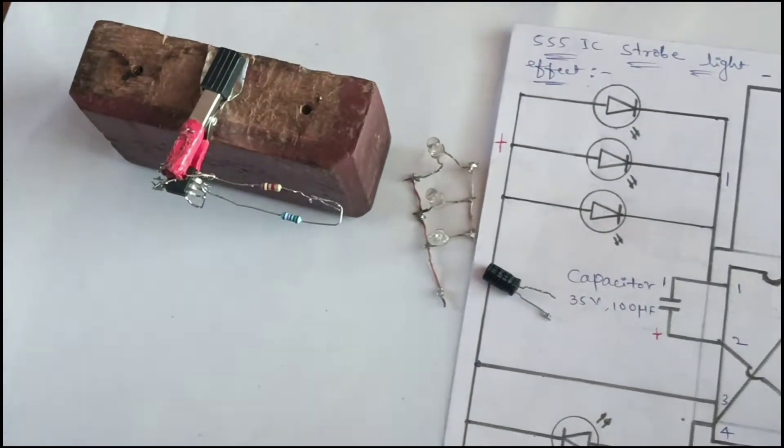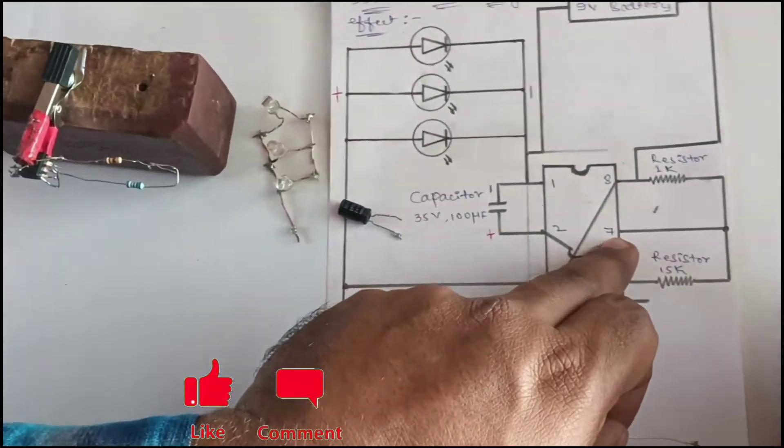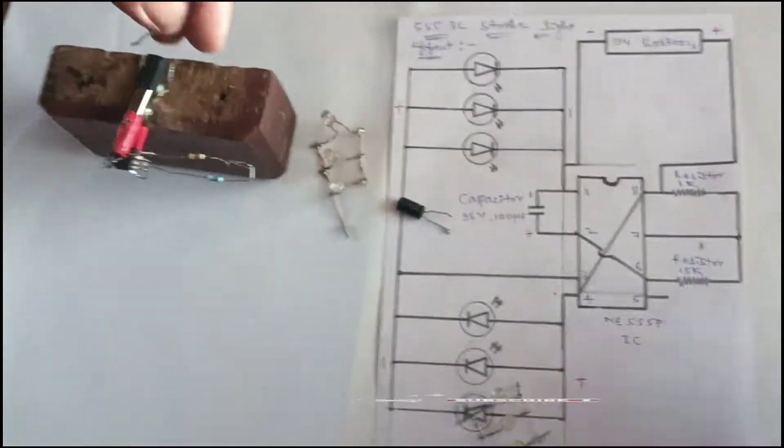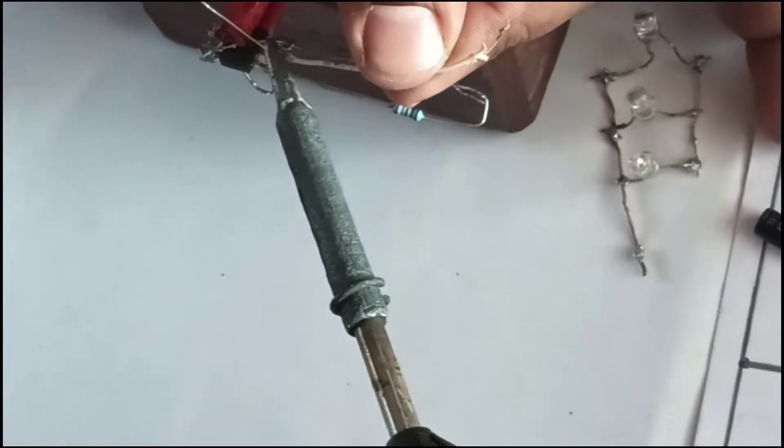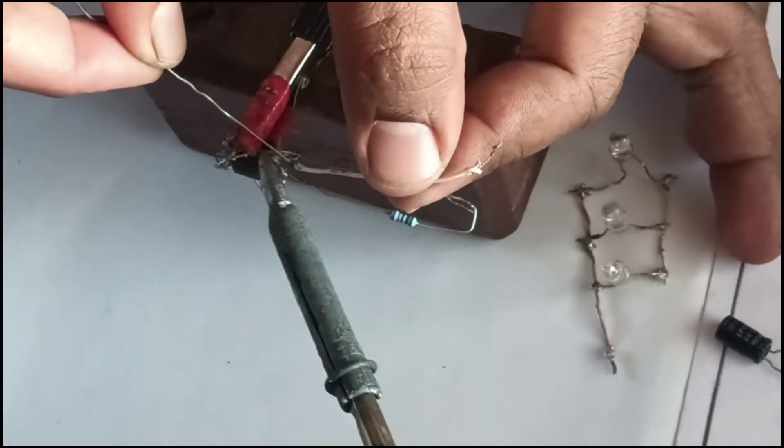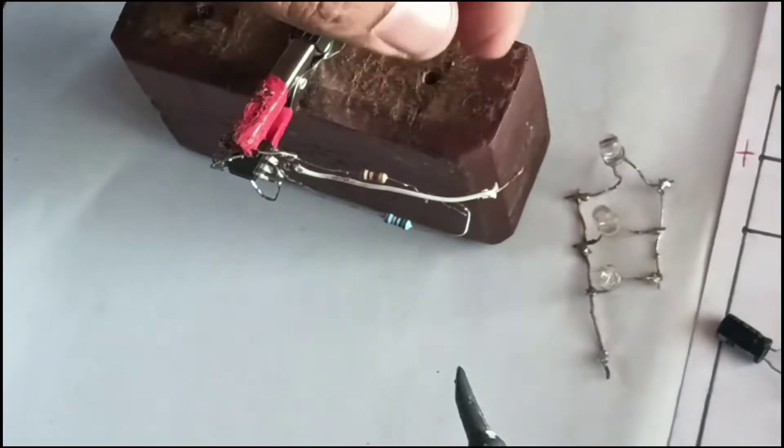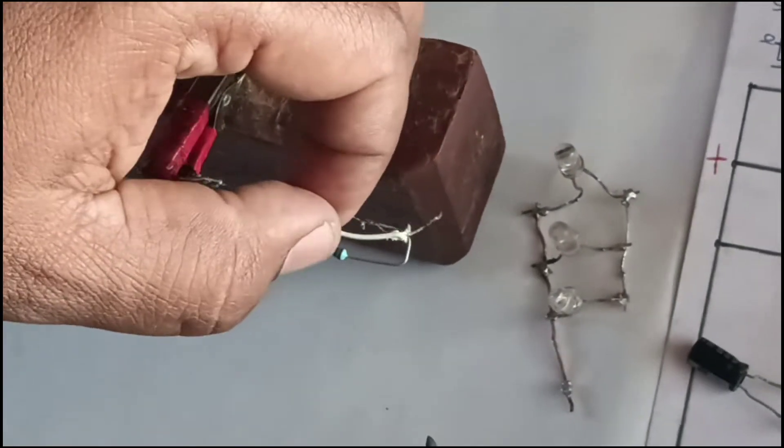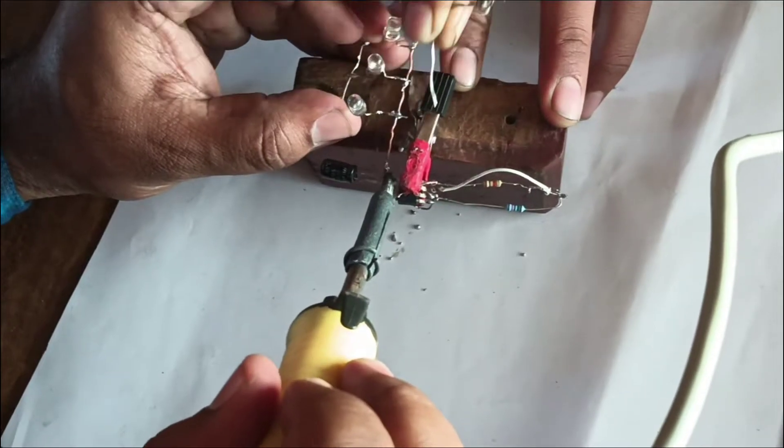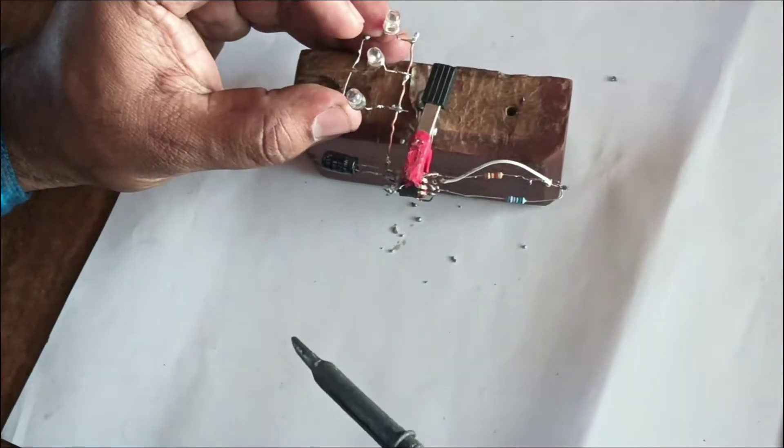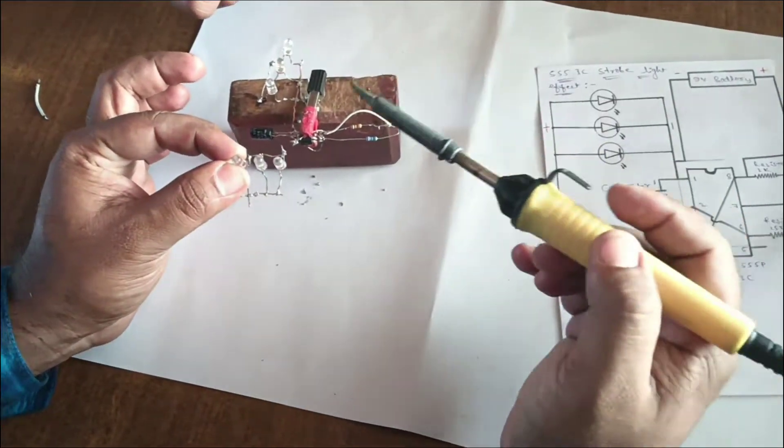Next, take one link wire from pin number 7 to the midpoint of these two resistors. Take this link wire and connect it to these two points. Another group of three LEDs connects to pin number 4.